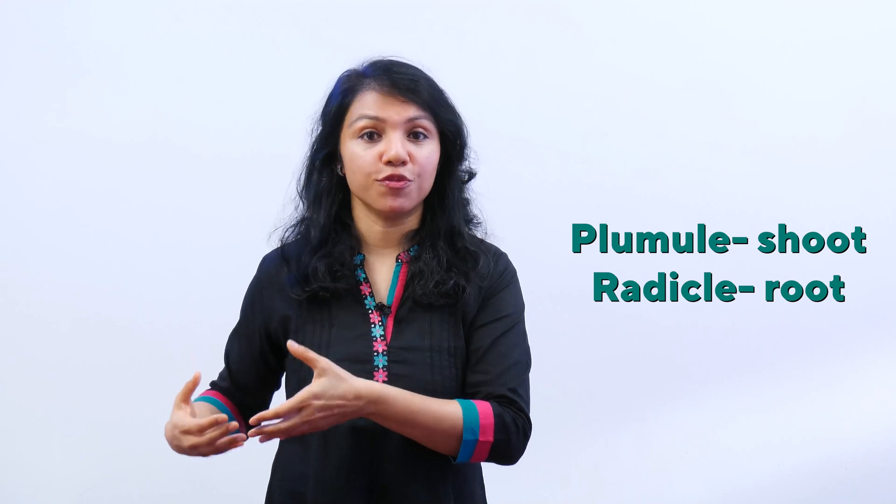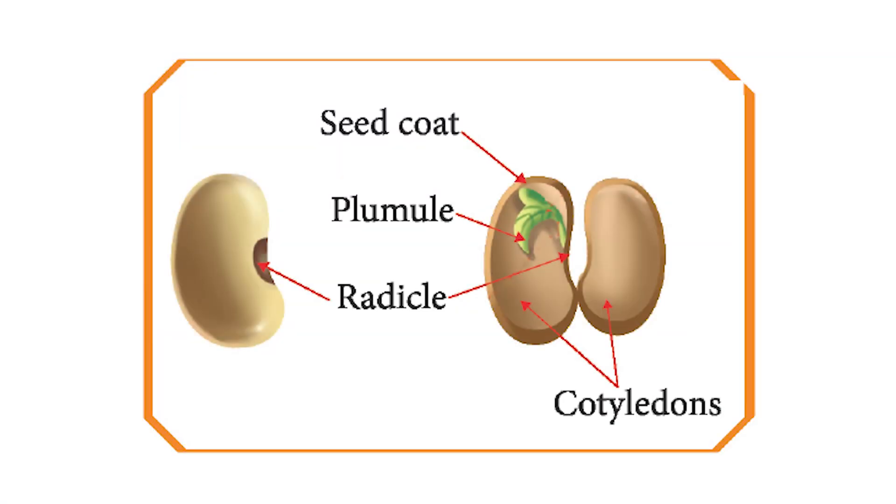These cotyledons carry the food that's needed for the embryo. And where is the embryo or the baby plant? It is in between the cotyledons. The baby plant or the embryo has two parts: a plumule that will grow into a shoot, and a radicle that will grow into roots. If you look at a seed, you can see only the seed coat. Everything else like cotyledons and the embryo are inside the seed. If you break open a seed, you will be able to see a baby plant inside. The process by which the baby plants grow out of the seeds is called germination.